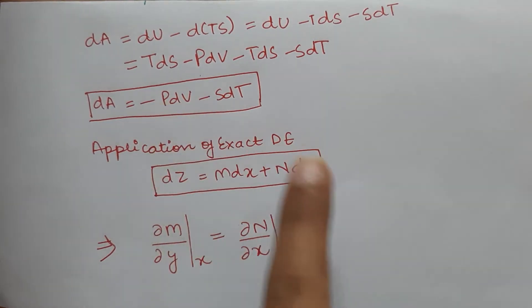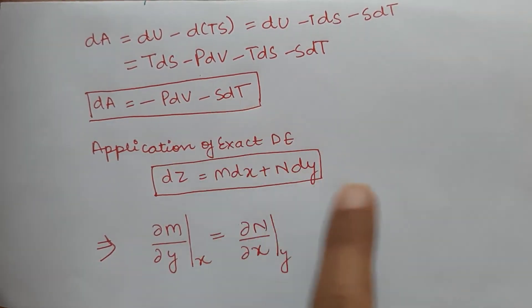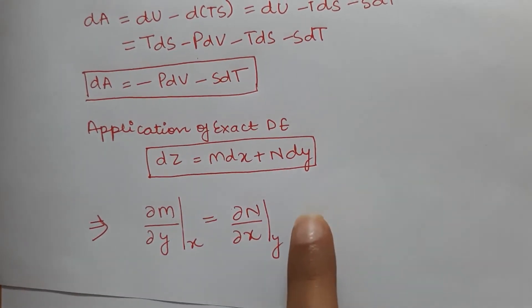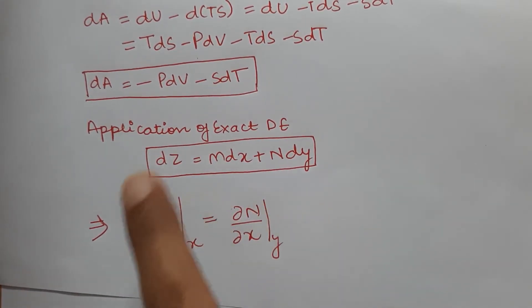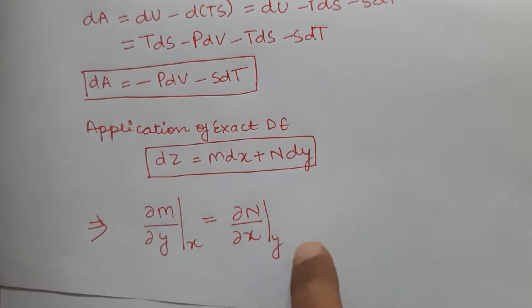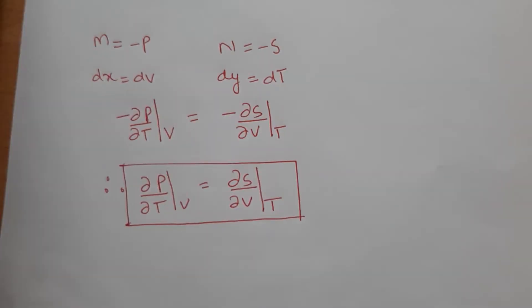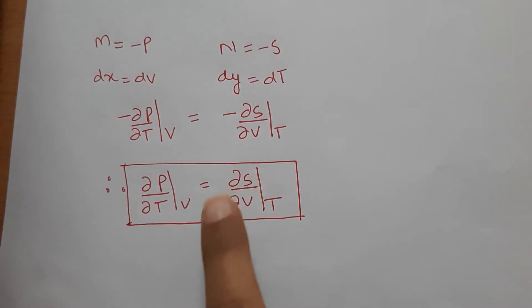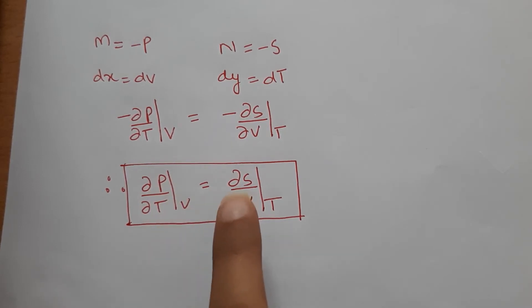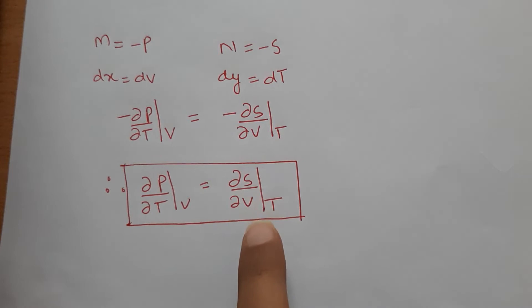With x = V and y = T, substituting M, N, x, and y into the Maxwell relation form gives: (∂P/∂T)_V = (∂S/∂V)_T.